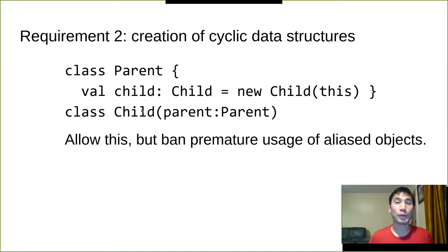The second requirement is to support the creation of cyclic data structures. So we have a class parent and it has a pointer to a child. And then it has a child which has a pointer to a parent. The idea is that the system should allow something like this, but it should ban premature usage of aliased objects. There is no restriction. It's like there's cyclic data structures and you are able to initialize the whole thing. There's some point at which the whole data structure is initialized. Before that, you don't want the object to be used in some sense.